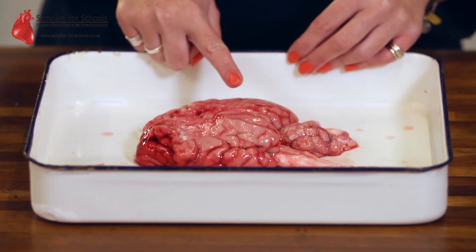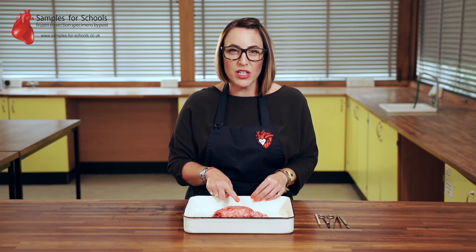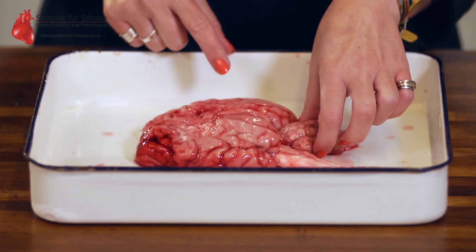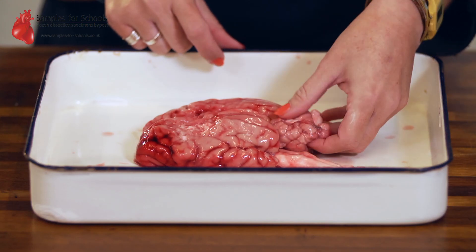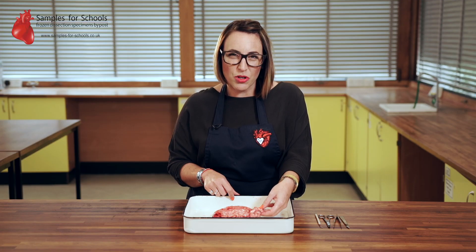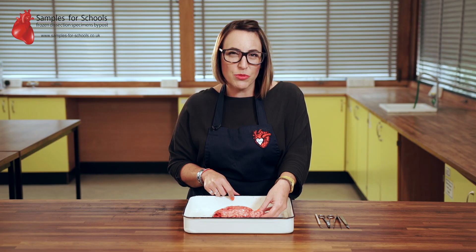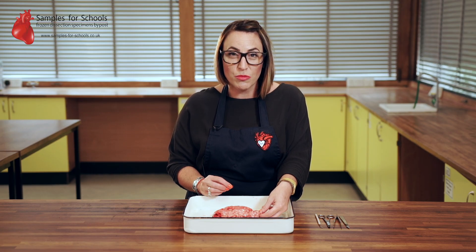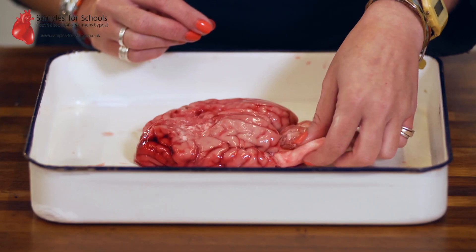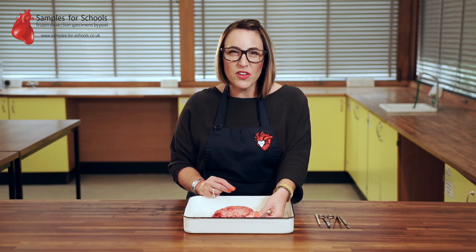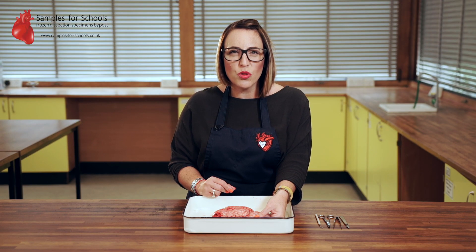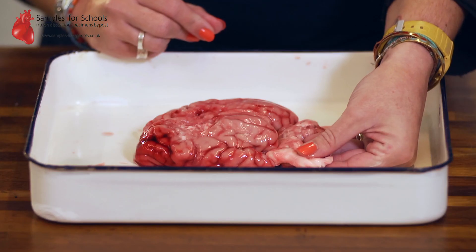Close behind it is the occipital lobe, which is important in integrating all our visual stimuli. The cerebellum at the back is for fine motor skills, balance and posture, and being able to move our body parts in a very intricate and controlled manner. The brain stem is slightly different — think of it as your autopilot. It's responsible for all things you're not consciously thinking about: breathing, swallowing, heart rate.